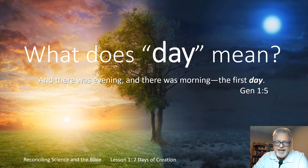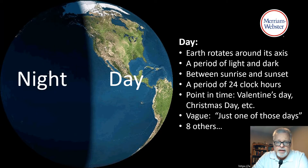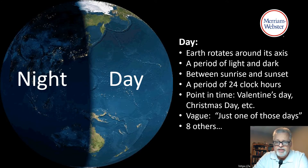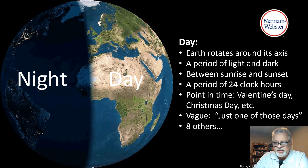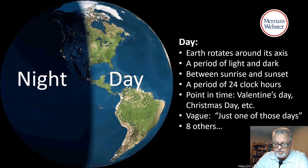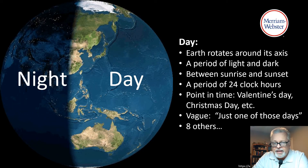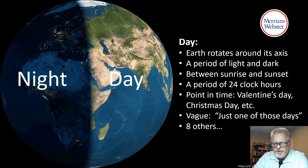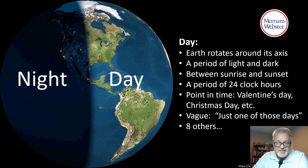To get started, what does a day mean? We all know there are really two periods in a day — the daylight period and the evening period. A day to us means a 24-hour period of time. If you look in the dictionary, you'd find definitions like: the time it takes Earth to rotate around its axis, a period of light and dark between sunrise and sunset, a period of 24 hours, a point in time like Valentine's Day, or just a vague non-reference to any specific day. Merriam-Webster lists eight other definitions for day.